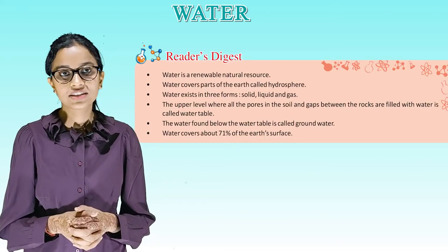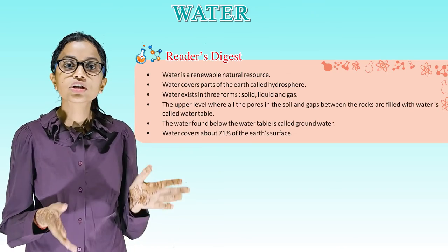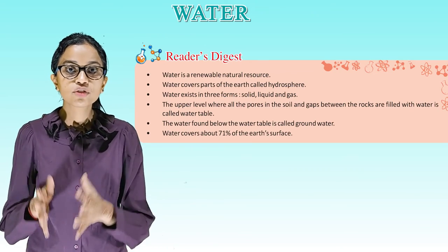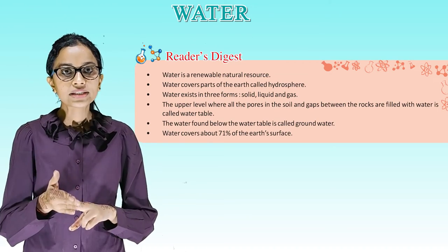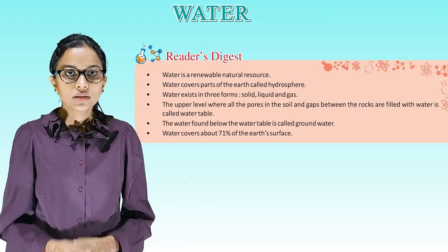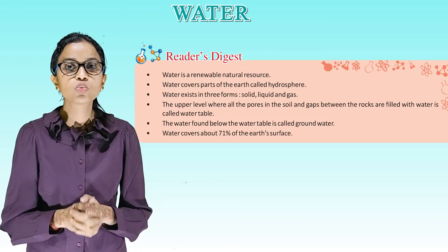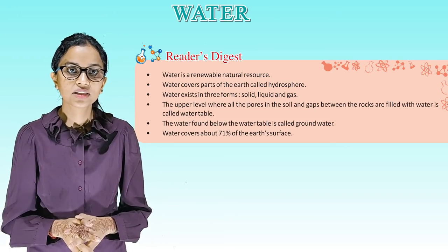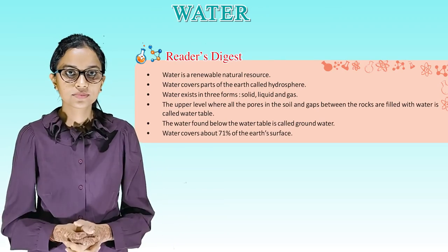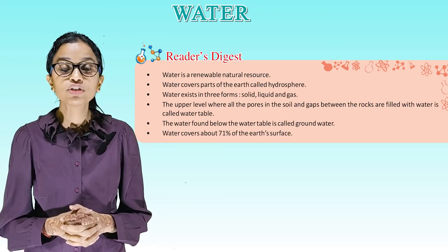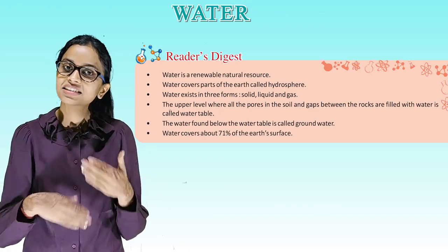So students, it's time for a reader's digest. Water is a renewable natural resource. Water covers parts of the earth called the hydrosphere. Water exists in the form of solid, liquid and gas. The upper level where all the pores in the soil and gaps between the rocks are filled with water is called the water table. The water found below the water table is called groundwater. Water covers about 71% of earth's surface. We'll meet in the next class. Bye.